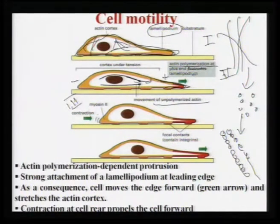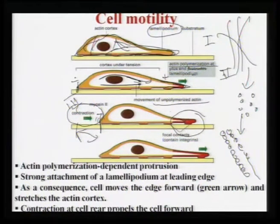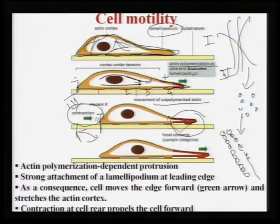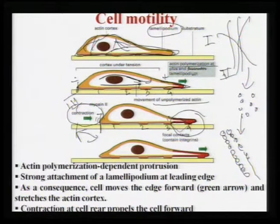In the third stage, at the minus end there is some contraction. This contraction takes place because focal contacts are established. There are focal contacts 1, 2, 3, and 4 visible in this figure. The focal contacts are the contact points through which cells interact with the extracellular matrix, or through which cells receive signals from the extracellular matrix for migration, proliferation, and replication.